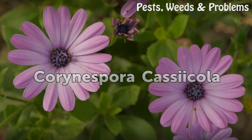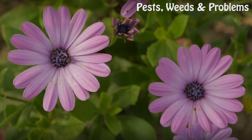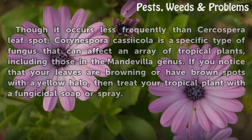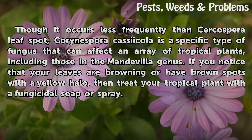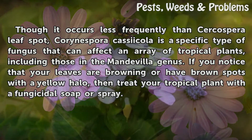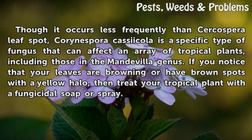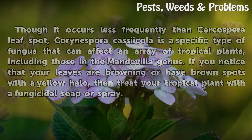Corinsperic ashy coli. Though it occurs less frequently than Circus per leaf spot, Corinsperic ashy coli is a specific type of fungus that can affect an array of tropical plants, including those in the Mandevilla genus. If you notice that your leaves are browning or have brown spots with a yellow halo, then treat your tropical plant with a fungicidal soap or spray.